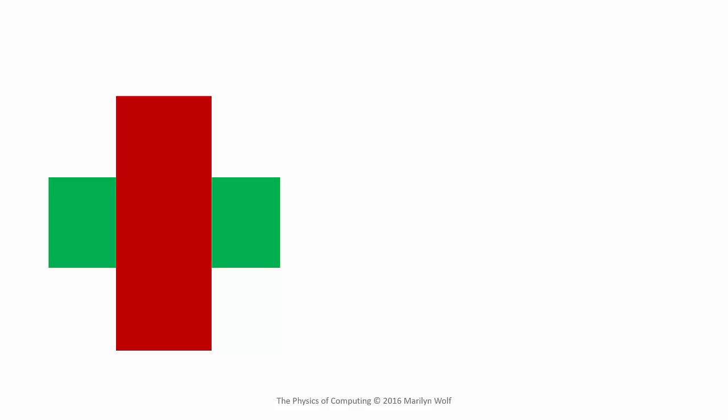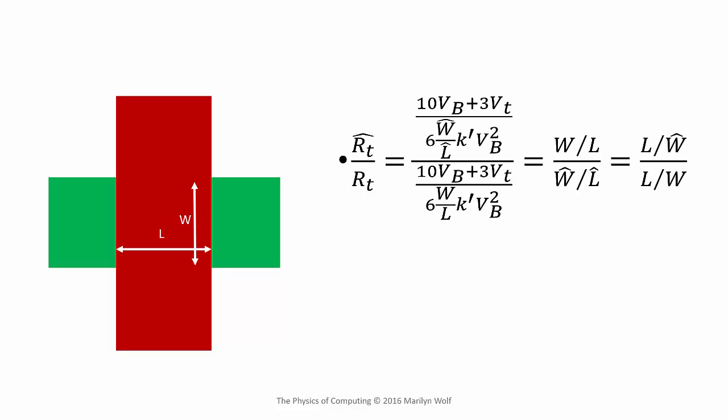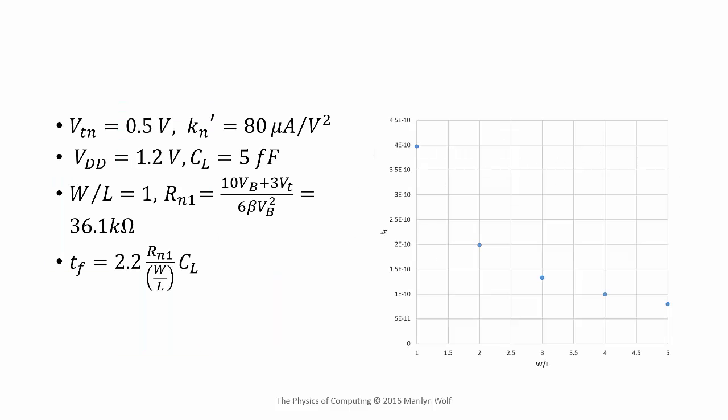Circuit designers choose the widths and lengths of their transistors. We can use transistor sizing to control the balance between delay and power consumption. The transistor's channel is defined by its width and its length, and the effective resistance depends upon the ratio of its length to its width. As we increase the width, the current increases and its effective resistance goes down. In digital design, we don't often increase the length, but if we did, the effective resistance would go up. So the transistor effective resistance is inversely proportional to its width. This plot shows that as we increase the width of the transistor, the delay of the inverter goes down.